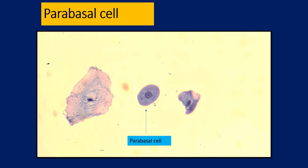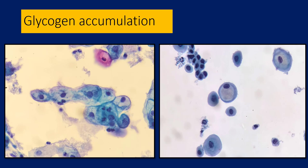The parabasal cell is a much smaller cell than a superficial squamous cell, with an ellipsoid/oval shape and a centrally placed nucleus. The nuclear size is roughly that of an intermediate squamous cell, slightly larger. Parabasal cells are usually not found in most smears, but in certain situations like atrophy, they become the predominant cell component.